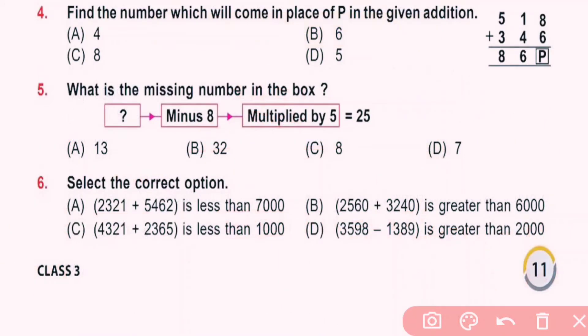Question number 4: Find the number which will come in place of P in the given addition. Here 8 plus 6 is 14, 1 carry over. 1 plus 1 is 2, 2 plus 4 is 6, and 5 plus 3 is 8. So P is 4. A is correct answer.